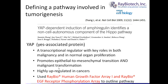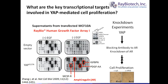Daniel's group utilized the Ray Biotech Human Growth Factor Array 1 and the Ray Biotech EGF receptor phosphorylation array to outline a novel pathway that involves YAP in the transformation of epithelial cells. They utilized the epithelial non-transformed cell line MCF10A, and transfected it transiently with either empty plasmid vector or a vector that expresses a constitutively active form of Yes-Associated Protein.